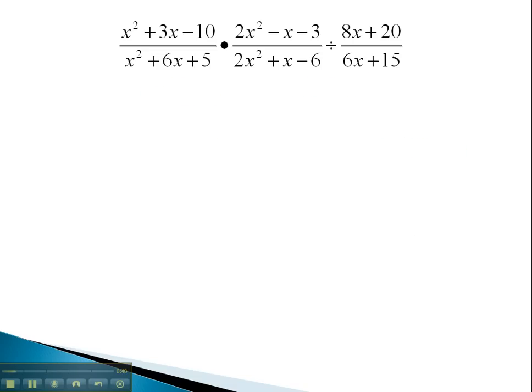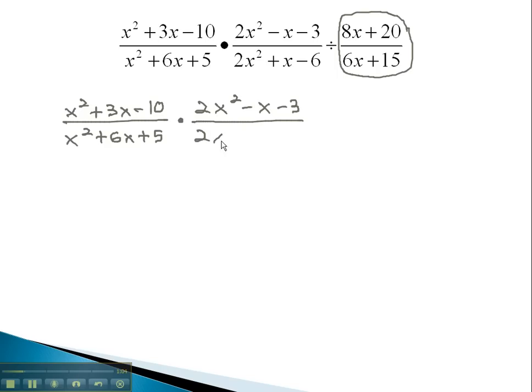Here, we see both multiplication and division in the same problem. We notice that the division is going to mean we need to multiply by that reciprocal. We now have x squared plus 3x minus 10 over x squared plus 6x plus 5, times 2x squared minus x minus 3 over 2x squared plus x minus 6, and now we multiply by the reciprocal, which will give us 6x plus 15 over 8x plus 20.